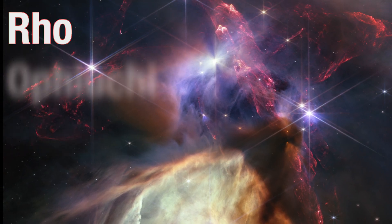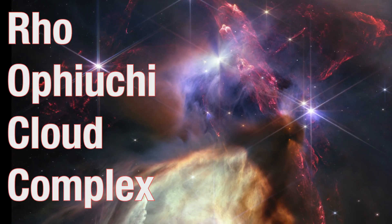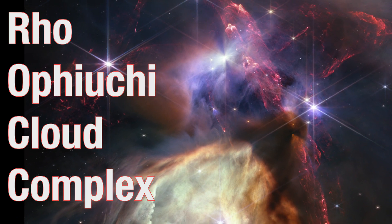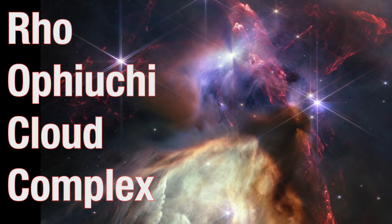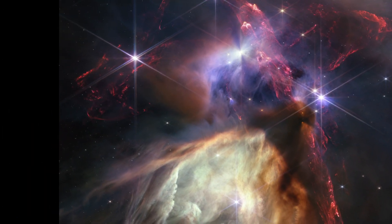The Ro Ophiuki Cloud Complex, a small star-forming region, is located 390 light-years away, the closest star-forming region to Earth.